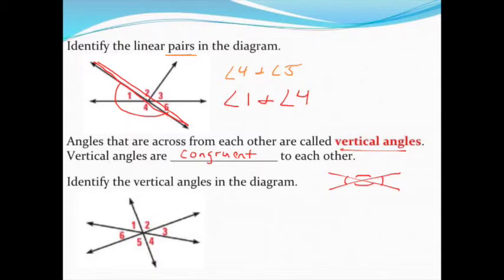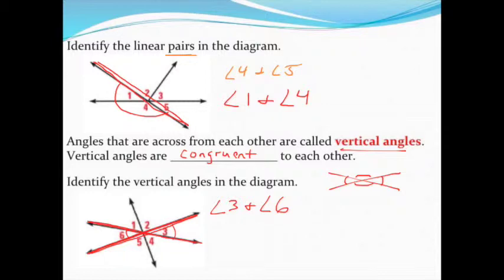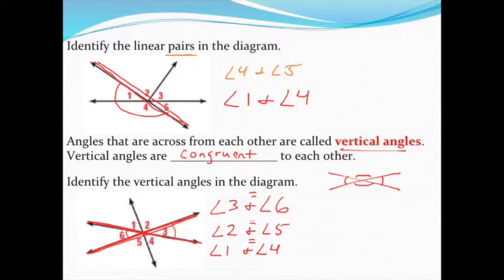In this diagram there are three sets of vertical angles. It helps to trace only two lines at a time. Looking at just two lines, angle three and angle six are vertical angles — they're across from each other. Similarly, angle two and angle five are vertical, and angle one and angle four are vertical. All vertical angle pairs are equal: three and six are equal, two and five are equal, and one and four are equal.